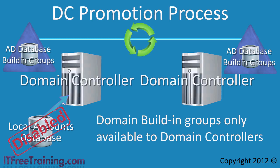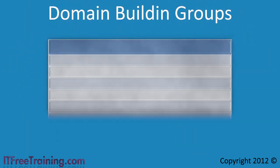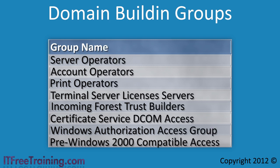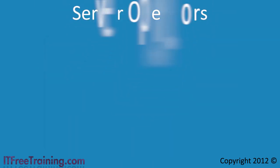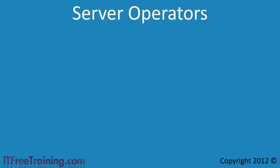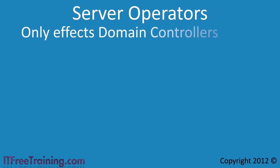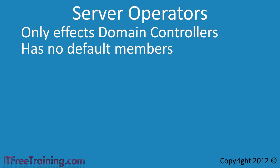In the last video I looked at the built-in groups available in Windows 7. I will now look at the extra built-in groups available in Windows Server 2008 R2 that are not available in Windows 7. The first group is the Server Operators group. In my opinion this group is poorly named, as it only exists in the Active Directory database as a built-in group and thus only affects domain controllers. The group has no default members, but if you add a user to this group they will be able to do the following.